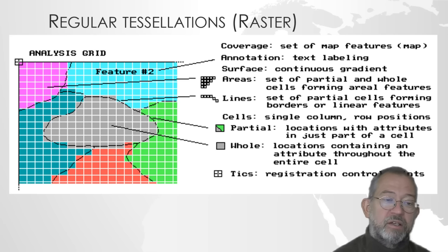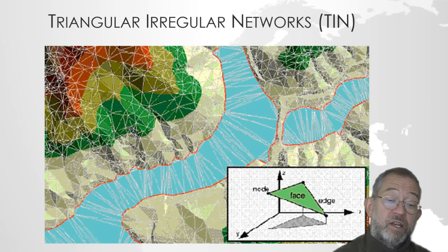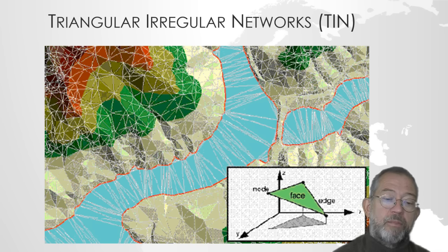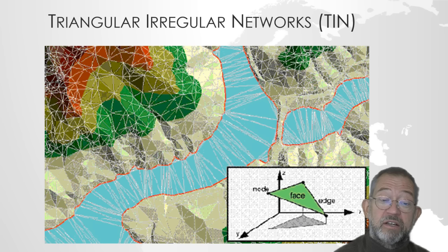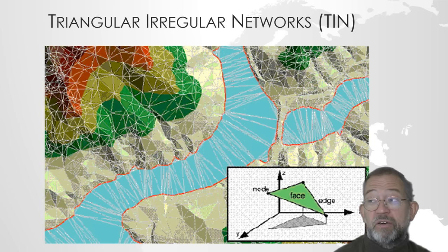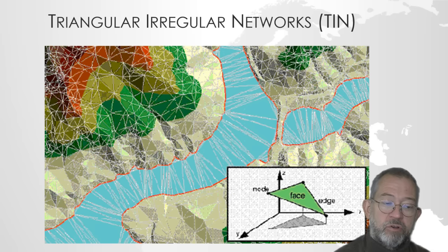TINs — Triangular Irregular Networks — are typically used for mountainous, non-glacial landscapes because of their rugged structures. The basic element is that we construct a surface based on triangles, which we call faces. Each corner of these triangles meets up with another triangle and they share elevation data, so that in that way we can construct a full surface.